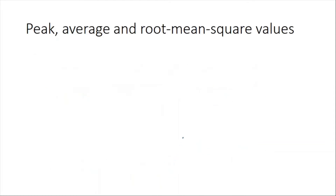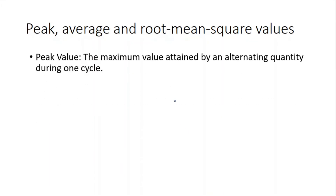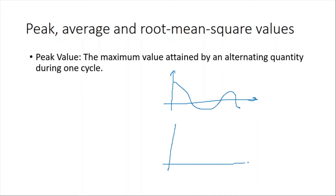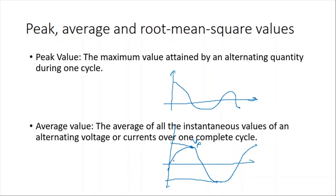Let's look at peak, average, and root mean square values. The peak value is the maximum value attained by an alternating quantity during one cycle. If your voltage is oscillating like a sine wave, the maximum positive value is the peak value V_peak, and there is also a minimum negative peak value.